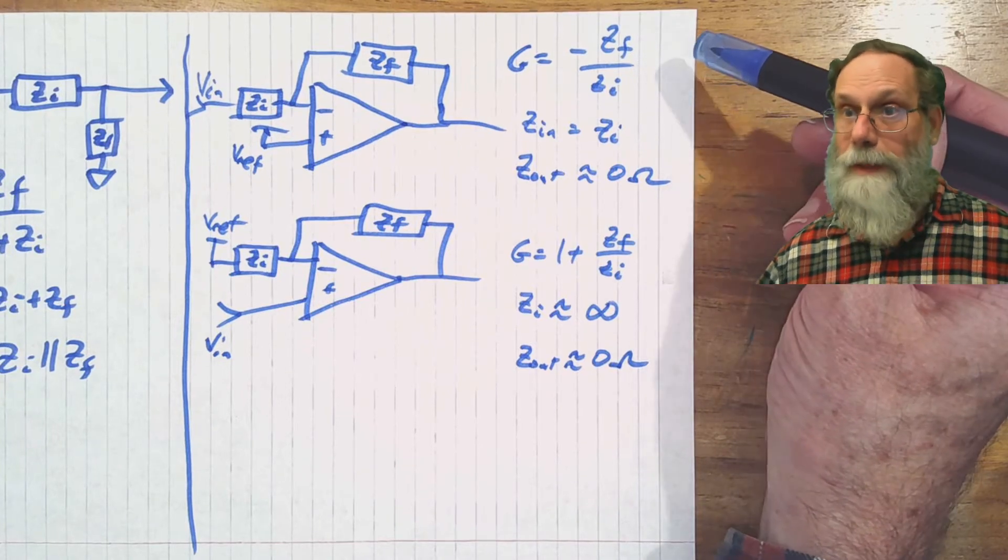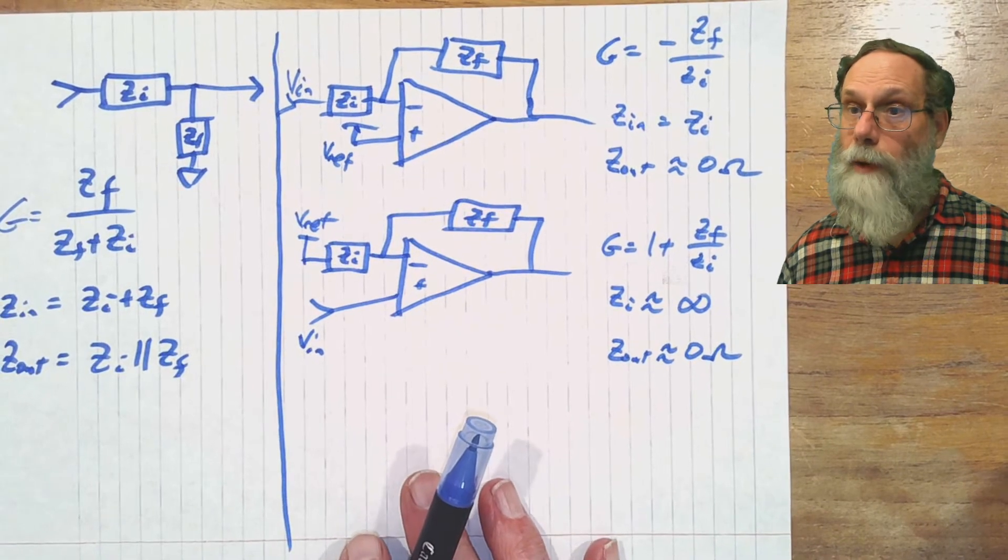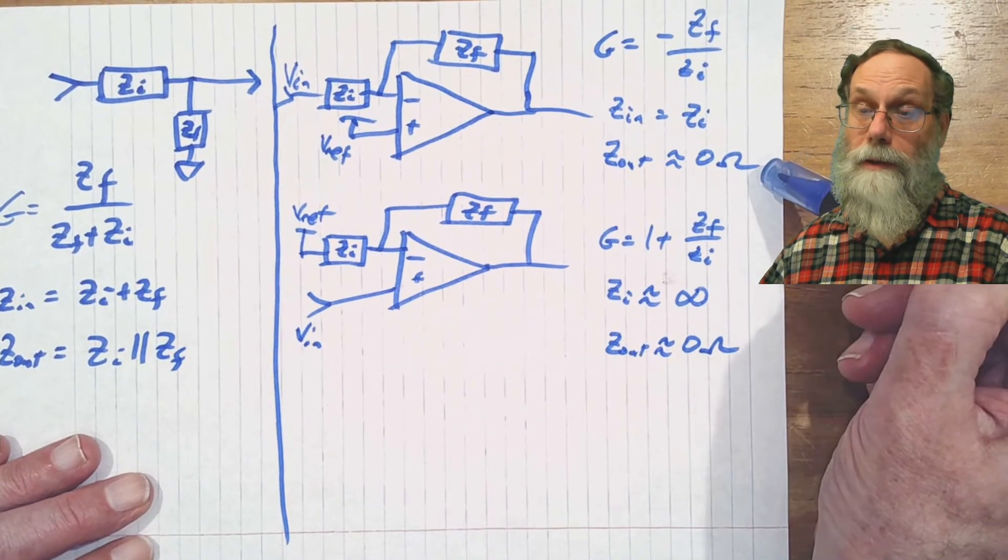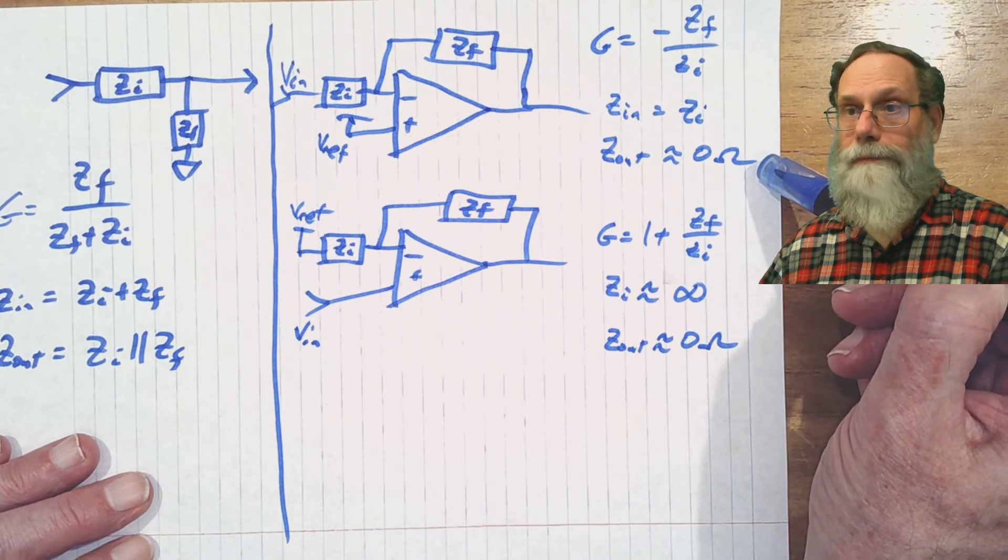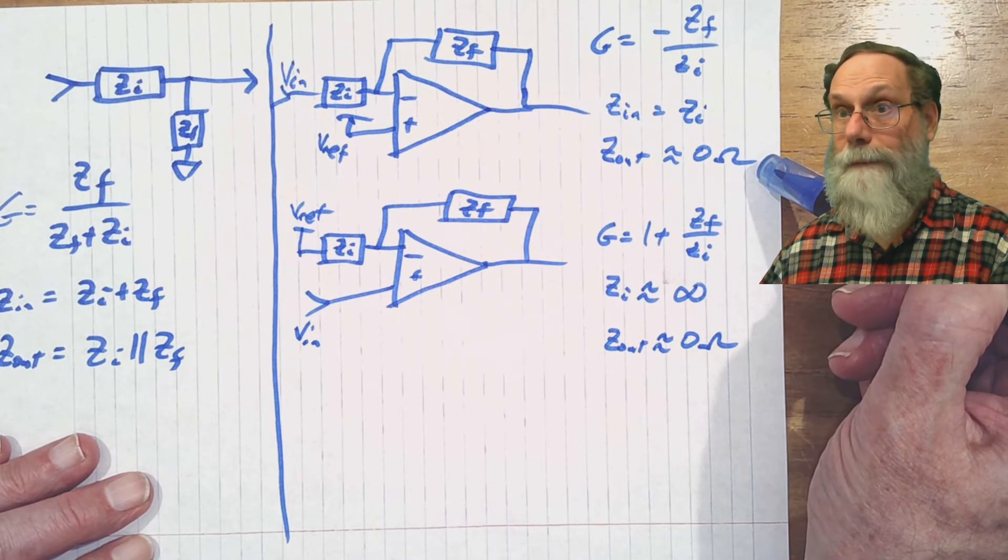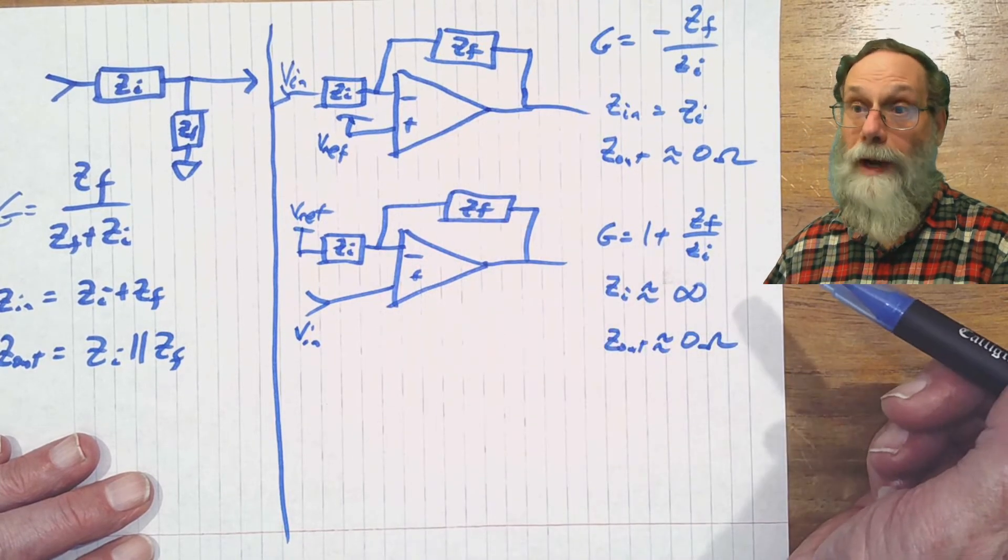So the big advantages of the active filter over the passive one? Zero output impedance, so that we can drive things with this and it doesn't really affect anything. This thing can provide a fair amount of current.